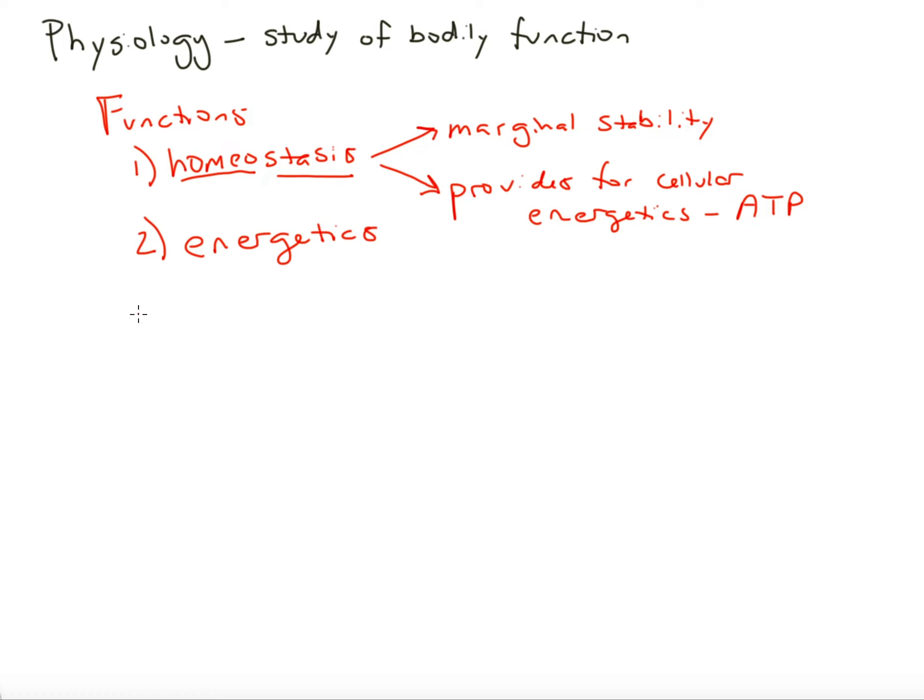Homeostasis certainly, so in other words, one and two are linked. And actually for both of these, because energetics is going to revolve around reactions, sequences like glycolysis and the Krebs cycle, which is made up of proteins. And of course, marginal stability is important for those proteins, enzymes involved in those energetic reactions. So one and two are going to be linked.